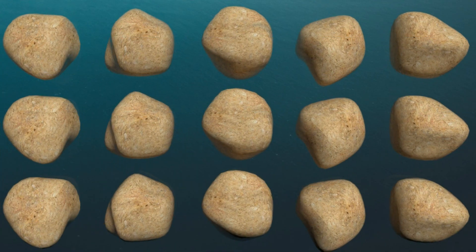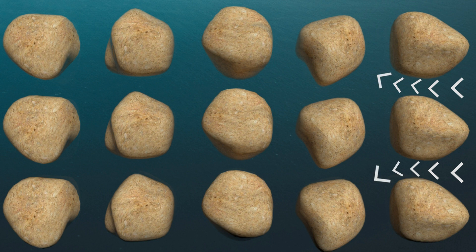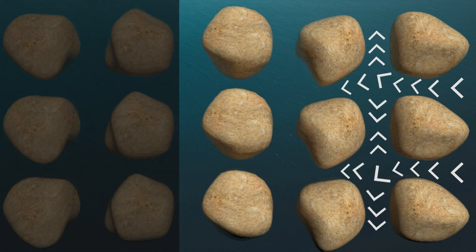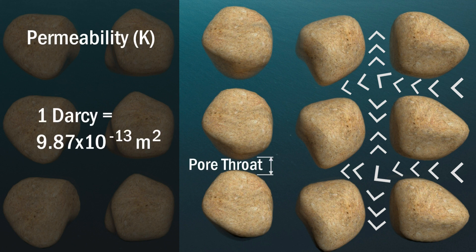For a reservoir to be economic to complete and produce, it must possess an essential property called permeability. This video will cover the basic concepts of permeability. Permeability is the capability of a rock to allow the passage of fluids through it. Permeability depends on the interconnectivity between pores, so it is controlled by pore throats.